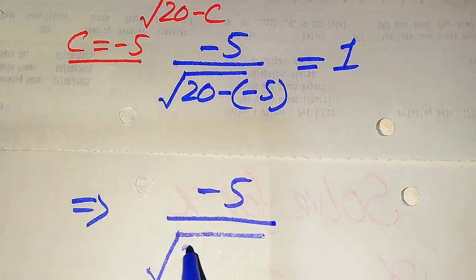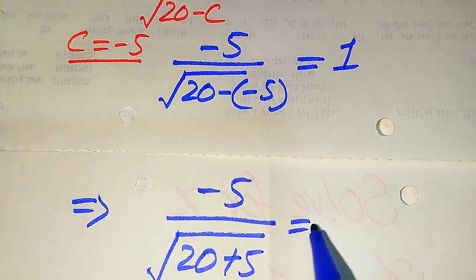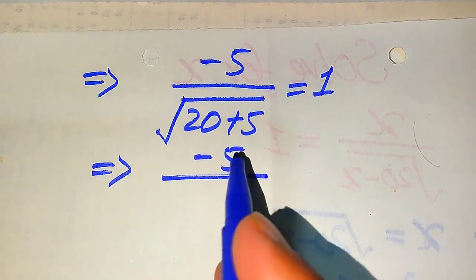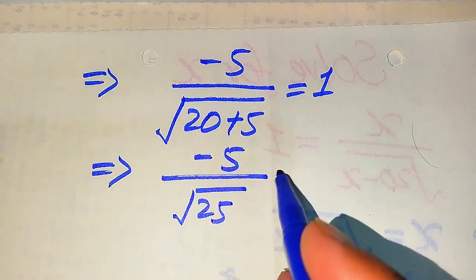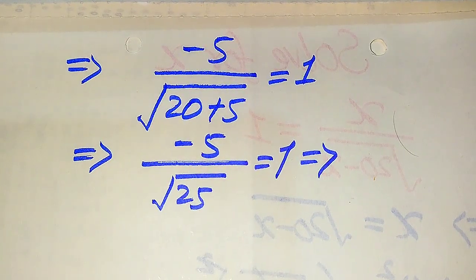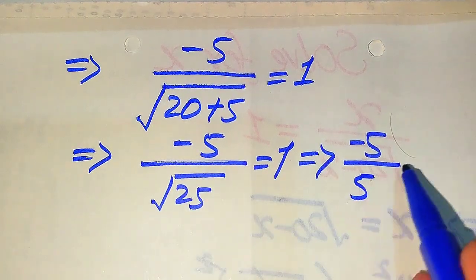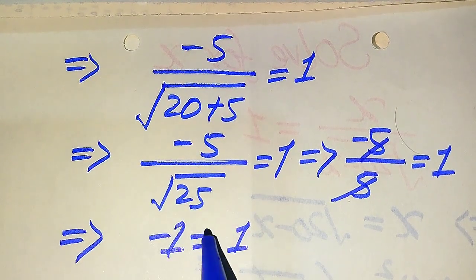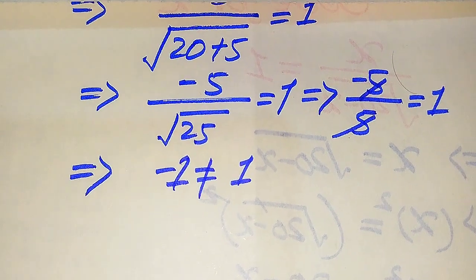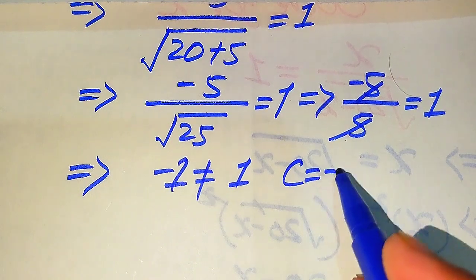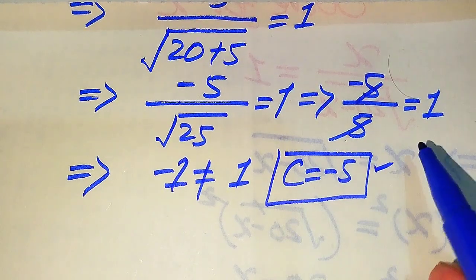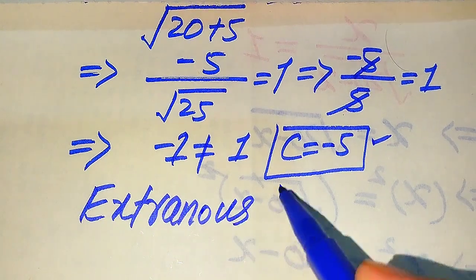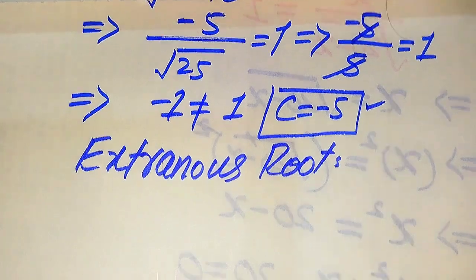This becomes minus 5 divided by the square root of 20 plus 5, which equals minus 5 divided by the square root of 25. The square root of 25 is 5, so the 5 cancels and we get minus 1 equals 1. Since minus 1 is not equal to plus 1, the value C equals minus 5 is the extraneous root of the given equation.